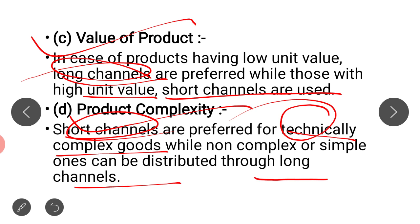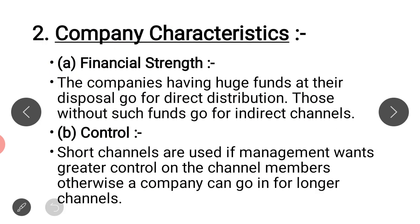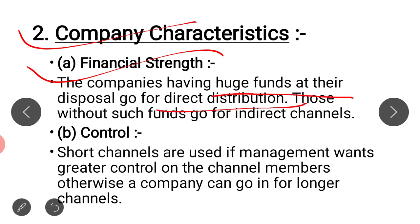Now we have factors related to the company. The first company-related factor is financial strength. If a company has more funds and finances, then they can go for direct distribution — they can have their own retail outlets to sell their products easily. If they don't have enough funds, then they can use indirect channels to reach their products to customers.